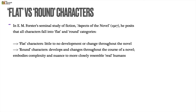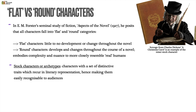Let's talk about the idea of flat versus round characters. In E.M. Forster's seminal study of fiction, Aspects of the Novel, published in 1927, Forster proposes that all characters essentially fall into flat and round categories. Flat characters are those with little to no development or change throughout a novel or story, whereas round characters are more complex because they develop and change throughout the course of a story, more closely resembling real human beings.